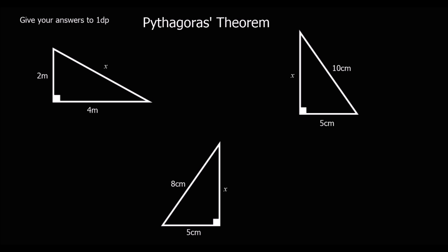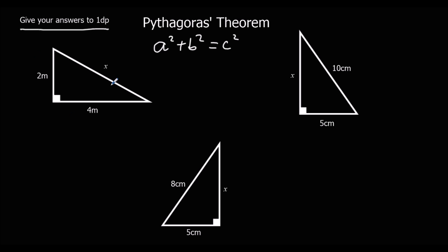There are three questions here for you to try — give them a go. You're going to need a calculator because these aren't going to give exact answers like the ones we had before. So A squared plus B squared equals C squared — try these questions.